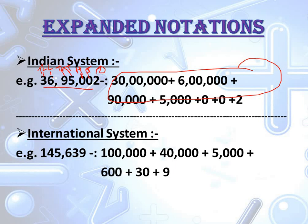Here is a simple trick: write the digit 3, then count how many digits are left — 6 digits remain, so write 6 zeros after 3, and put a comma according to the Indian system. Then plus. Write 6, count digits left — 5 — so write 5 zeros, put comma. Plus. Write 9, four digits left, so write 4 zeros. Plus. Write 5, three digits left, write 3 zeros. Then plus 0, plus 0, plus 2. Same way we can write expanded form for the Indian number system.